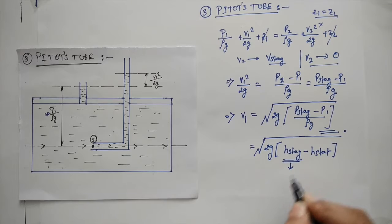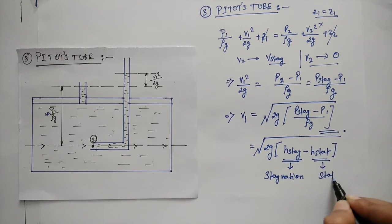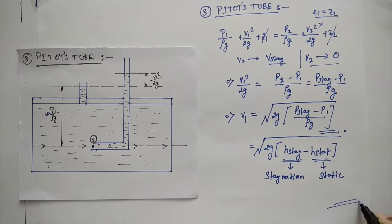This is known as the stagnation head and this is known as the static head. Hence this is the equation by which we can solve and we can get the velocity of v₁. And hence we have come to an end for the application of Bernoulli's theorem.